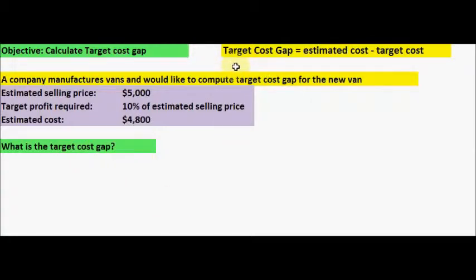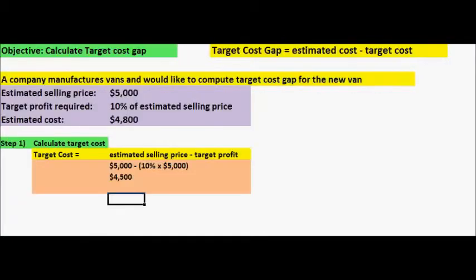We know that the target cost gap is calculated by taking the estimated cost minus target cost. So we have been given the estimated cost of $4,800, but we don't have the target cost given in the example. So first step is to calculate the target cost.